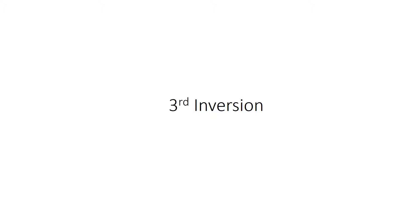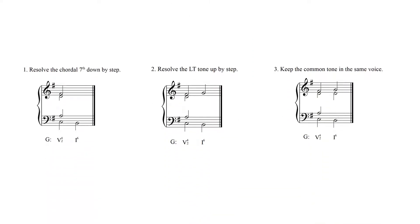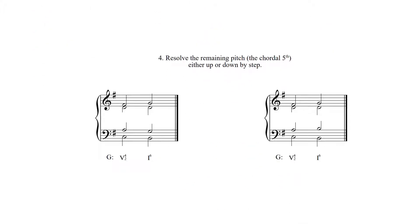Finally, let us follow the voice leading steps with a third inversion dominant seventh chord. First, resolve the chordal seventh down by step from C to B. This will inevitably result in a first inversion tonic triad, as the chordal third of the tonic triad appears in the bass voice as a result of that chordal seventh resolving down by step. Next, resolve the leading tone up by step, which is the F sharp to the G. Then retain the common tone in the same voice, which is the D in the tenor voice. Since the 5-4-2 chord almost always resolves to a first inversion tonic triad — again the result of the chordal seventh resolving down by step — the fourth step offers the same flexible doubling option we encountered before. The chordal fifth, or scale degree two, can move either down by step to the G or up by step to the B. Either answer is acceptable.